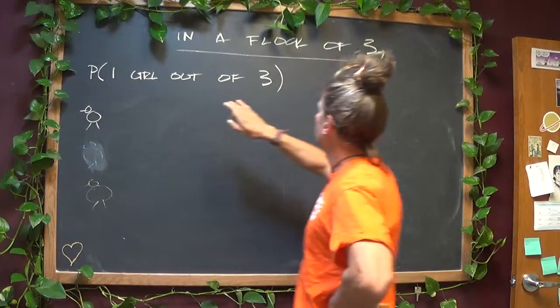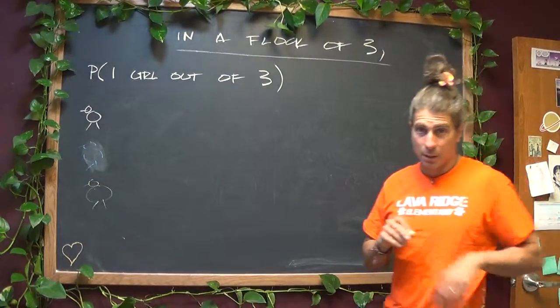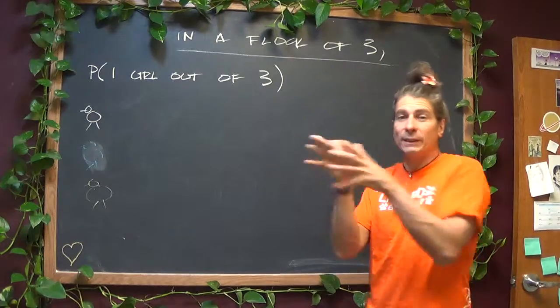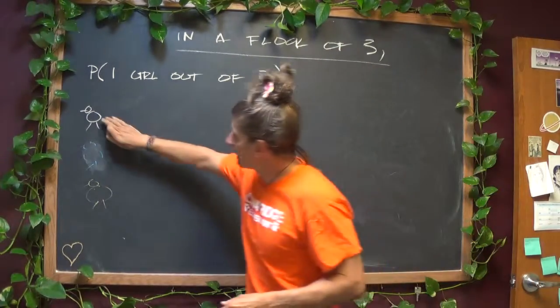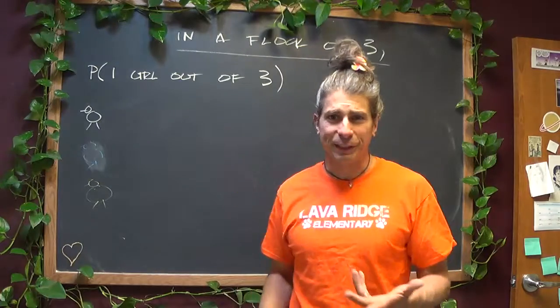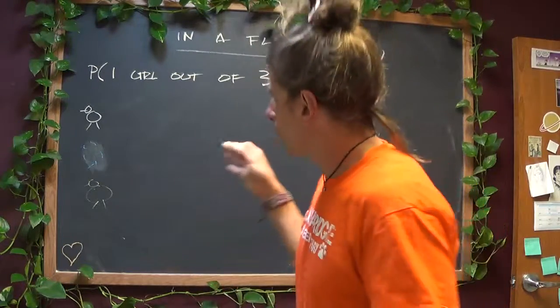I want one girl out of the three, which means I want two boys out of the three as well. So let's say these are your three chicks. I know they look the worst chicks ever drawn. I apologize.